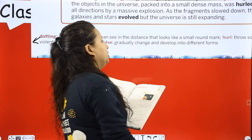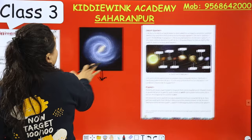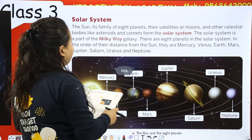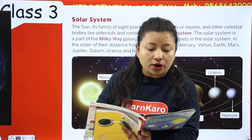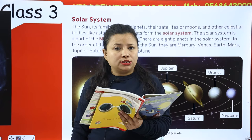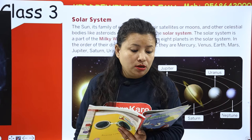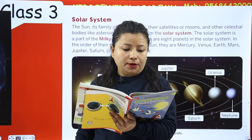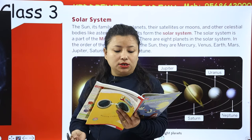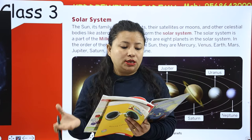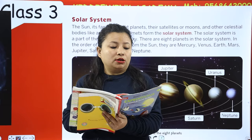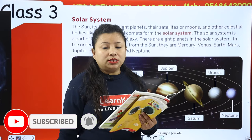Next is the solar system. The sun, its family of eight planets, the satellites or moons, and other celestial bodies like asteroids and comets form the solar system. Our solar system includes the sun and its family of eight planets: Mercury, Venus, Earth, Mars, Jupiter, Saturn, Uranus and Neptune. The solar system is a part of the Milky Way galaxy.